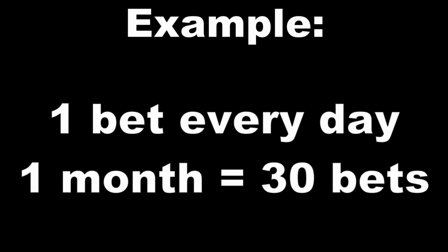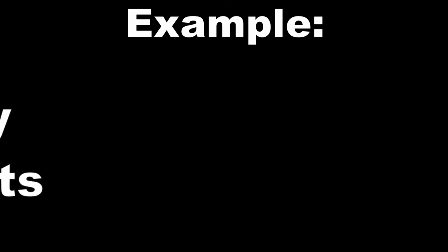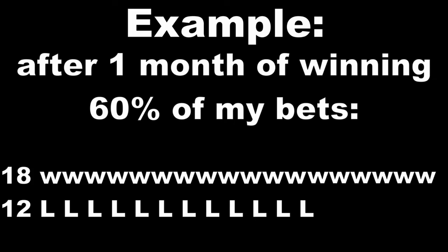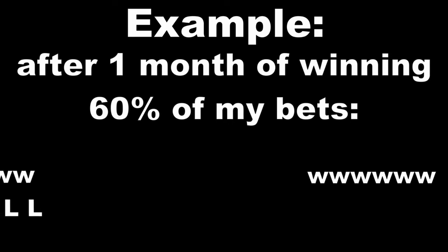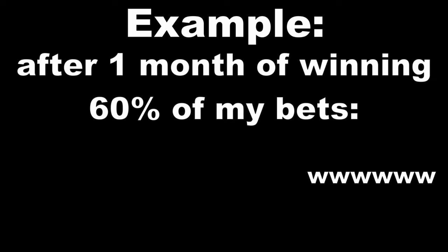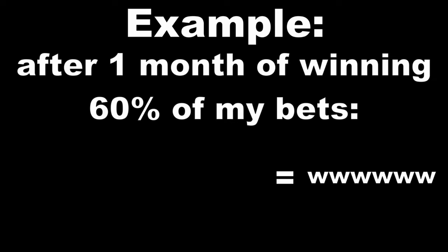Alright, in this example, I will be making one bet every single day, and after the first month, I won 60% of my bets. 60% of 30 days is 18 winning days. Take away 12 of these for the 12 losing days, and that leaves me with a profit of 6 wins and 6 units. Since my unit size is $50, that means I gained $300 from winning 60% of 30 bets.